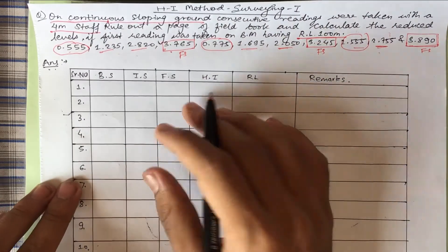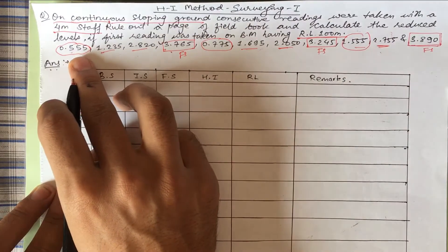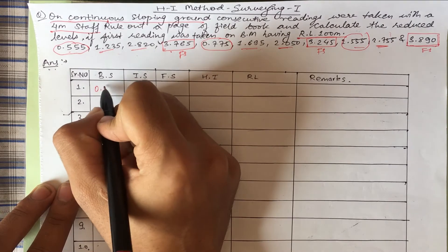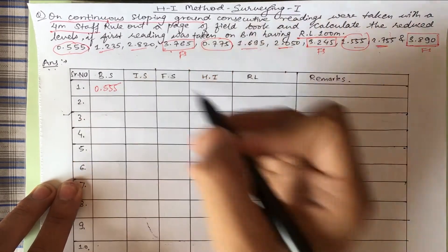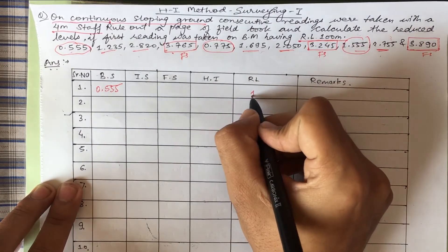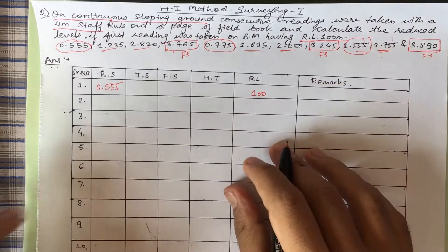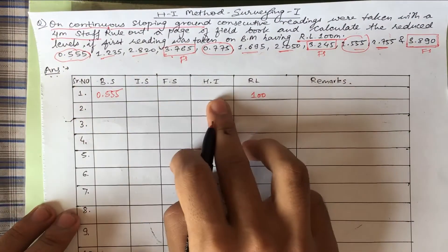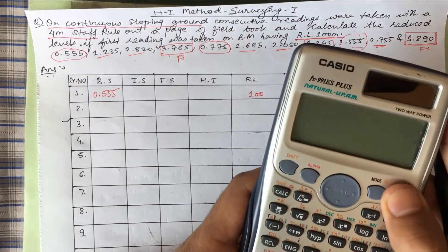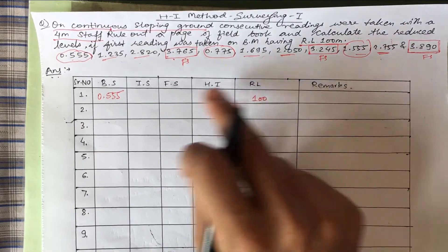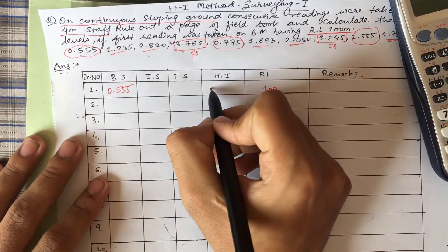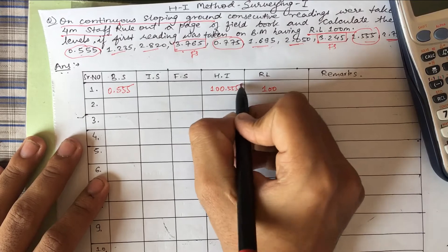Let's write here. First of all, 0.555, that is BS. The first point is BS, so we'll write here 0.555. Likewise, let's write RL first. RL is given as 100. Now how to write HI? We should add RL and BS, that is 100 plus 0.555, which equals 100.555.